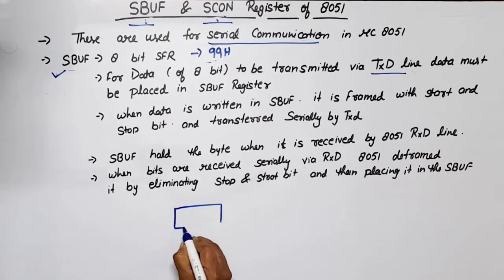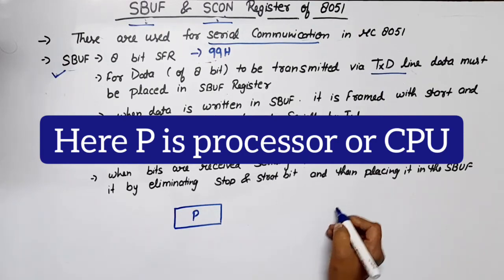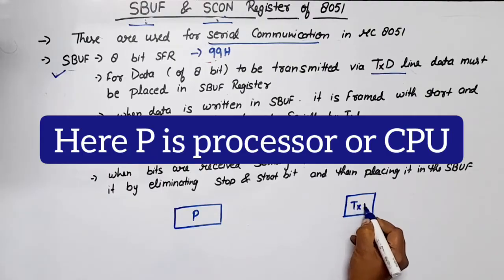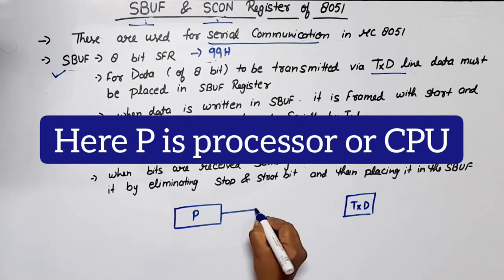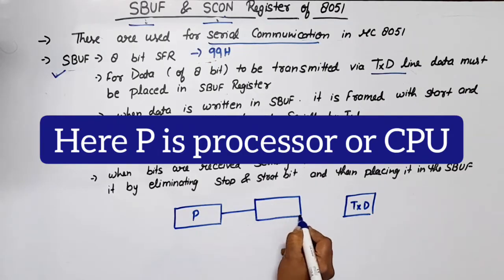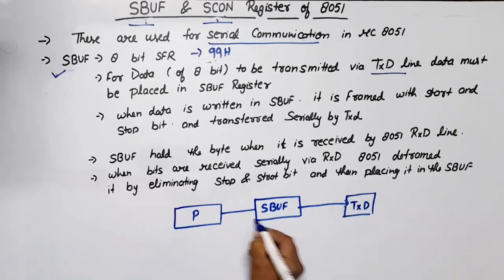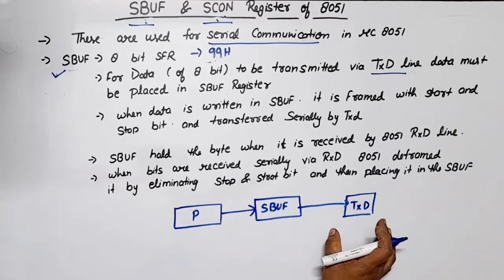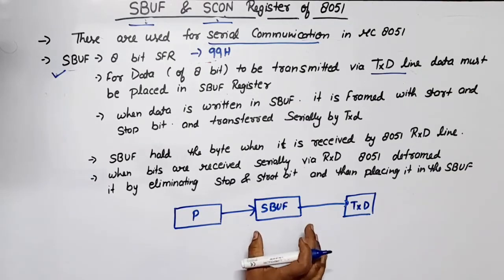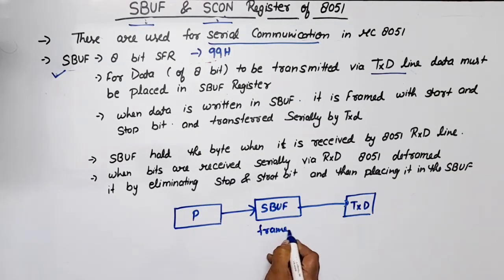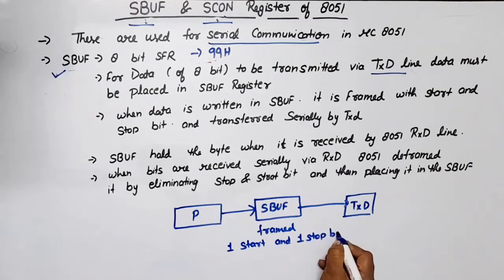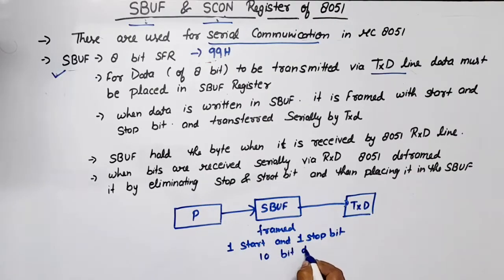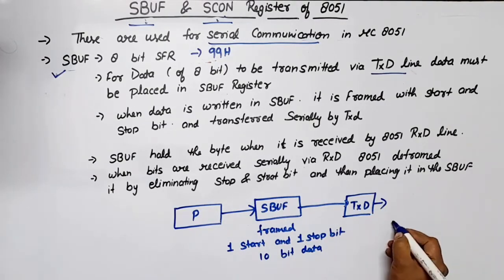Through a diagram, suppose the processor of the microcontroller wants to transmit data via the TXD line. Before transmitting, this data will be saved in the Serial Buffer Register. In the serial buffer register, it is framed — meaning one start bit and one stop bit are added with the data. So 10-bit data will be transferred via the TXD line to the peripheral. This is called a write operation.